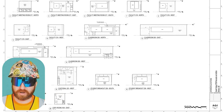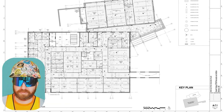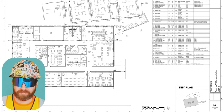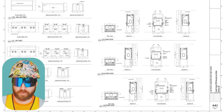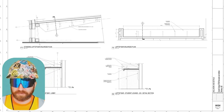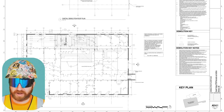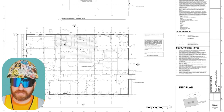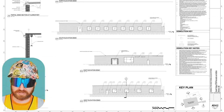A6.4 interior elevations continued. A7.1 reflected ceiling plan. A9.1 furniture plan. A9.2 enlarged lab plans. A9.3 lab wood casework and fume hoods. A9.4 millwork and details. A9.5 mock-up wall plan, elevation and section. And finally, AD0.1 demolition floor plan, and AD0.2 demolition section and elevations.